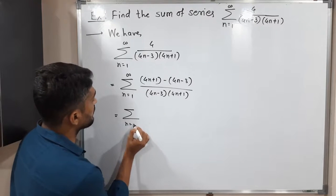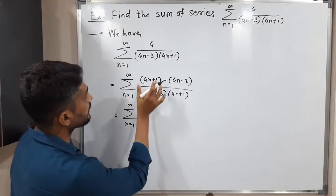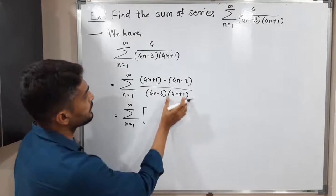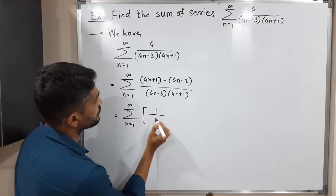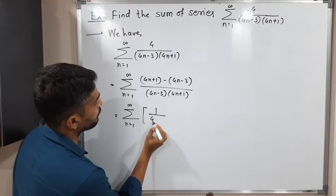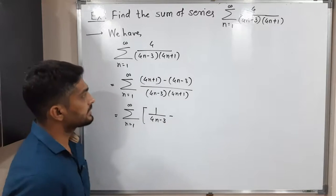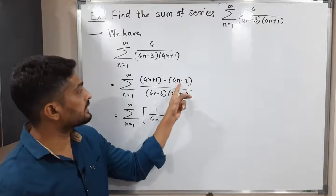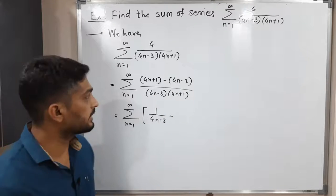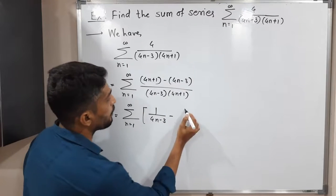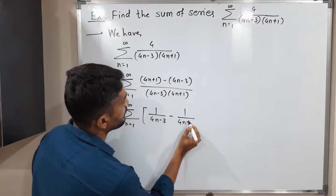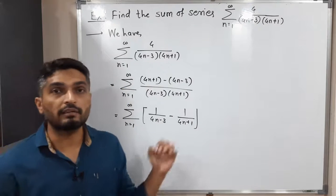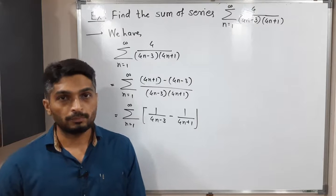Summation n running from 1 to infinity: dividing the bracket over the denominator separately. The (4n plus 1) terms cancel to give 1 upon (4n minus 3), minus the second bracket over denominator where (4n minus 3) cancels to give 1 upon (4n plus 1). So the given series is expressed as summation of [1/(4n-3) minus 1/(4n+1)].